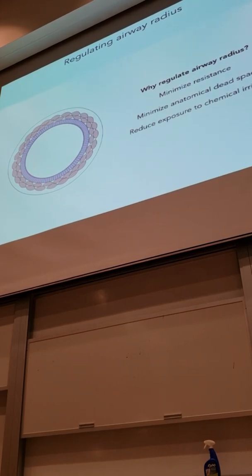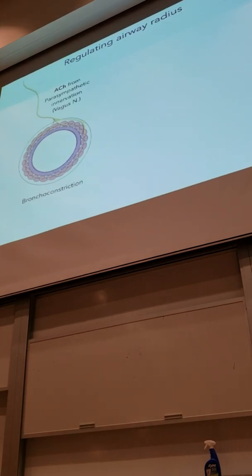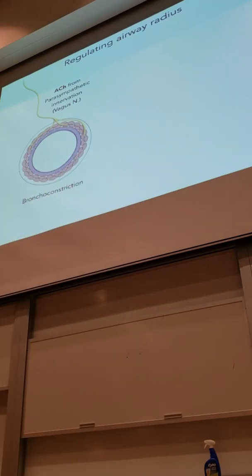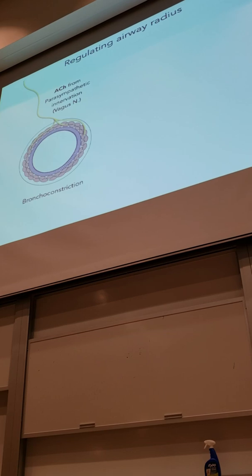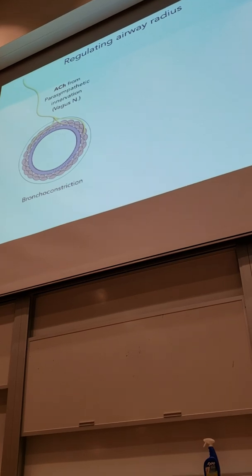So let's talk about how this happens. Bronchoconstriction can be stimulated by acetylcholine from the parasympathetic nervous system.